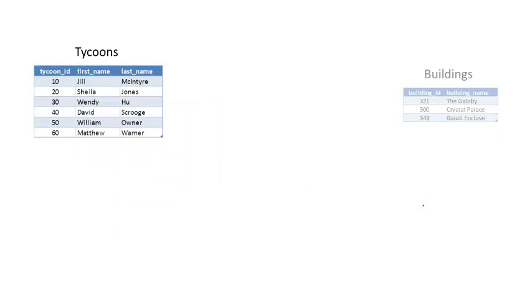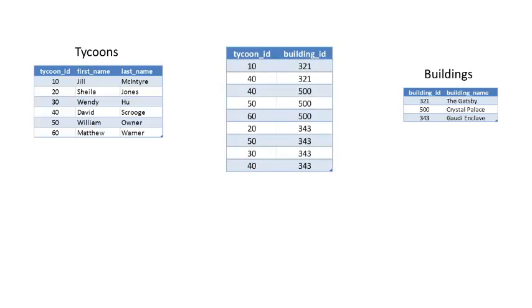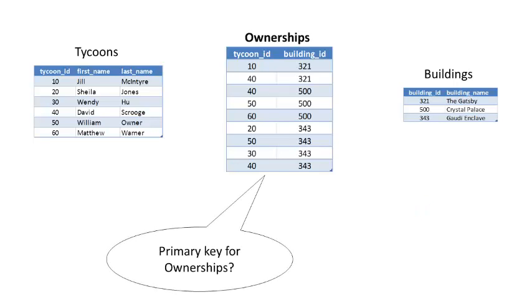This is how you represent a many-to-many relationship — you have no choice but to create a new table. In that table, you represent every single connection between one entity and another. Every time a person owns a building, you put a row in this table. Looking at it from a different perspective, you've got the Tycoons table, the Buildings table, and here is your relationship table. I chose to call this table 'Ownerships' because every row in the table represents an ownership — you could even call it 'Ownership Stake'.